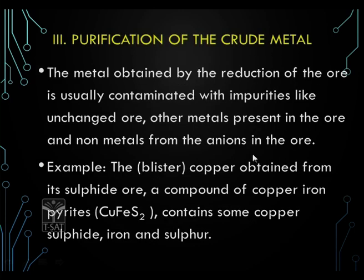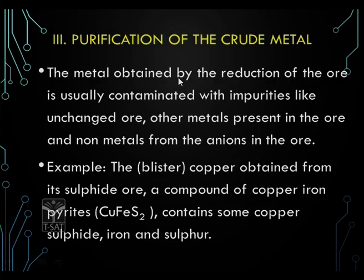Let us see purification of the crude metal. With the help of reduction, roasting, calcination, displacement, and electrolysis, we have extracted metals. The next step is purification of the metal extracted from their respective ores. The metal obtained by reduction of ore is usually contaminated with unchanged ore, other metals, and non-metals.